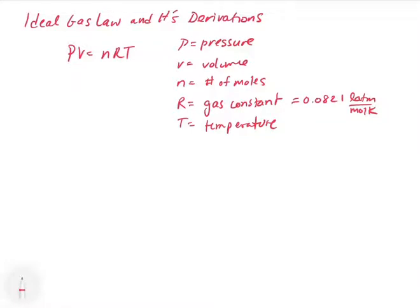Knowing that the gas constant has some specific units, we can assign the units to all the rest of the variables. For pressure, this has to be in atmospheres. Volume has to be in liters. The number of moles has to be in moles. The temperature has to be in Kelvin. The moles make sense because we need to know the number of molecules of the gas that's in there. Atmospheres and liters is somewhat arbitrary. They selected those to be the standard units for pressure.